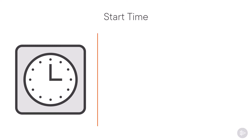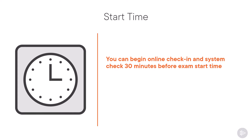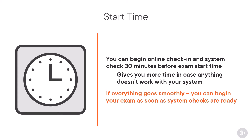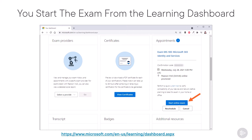You can actually begin online check-in and system check for the exam 30 minutes before the exam start time. This gives you more time in case anything doesn't work and allows you to go through the process more calmly. If everything goes smoothly, you'll probably be able to start your exam even before the scheduled time. You need to go to the Microsoft learning dashboard, where you will see your appointments, and if you have an online exam, there will be a button that says 'start the online exam' right there.